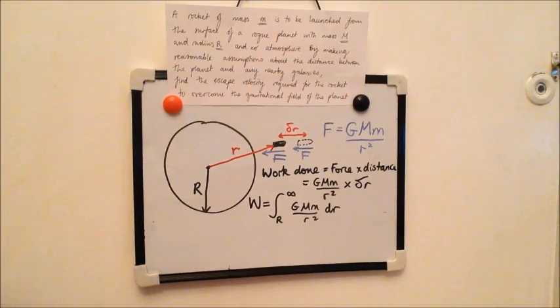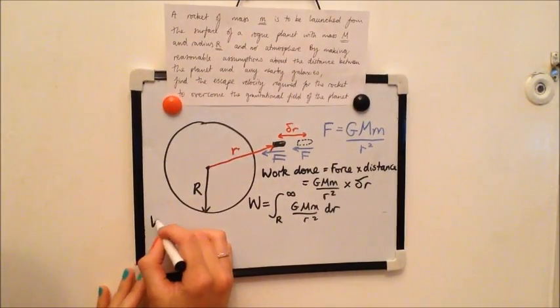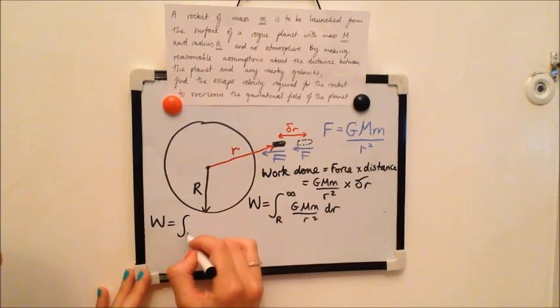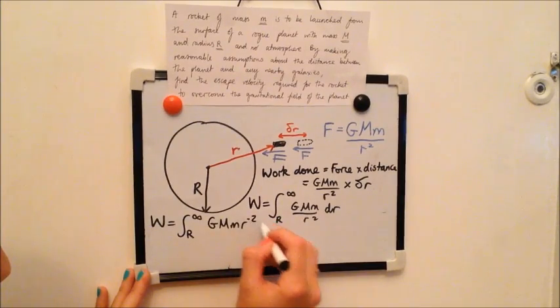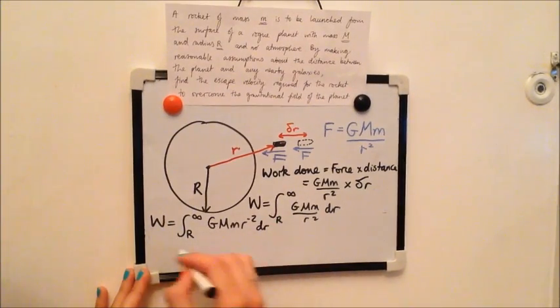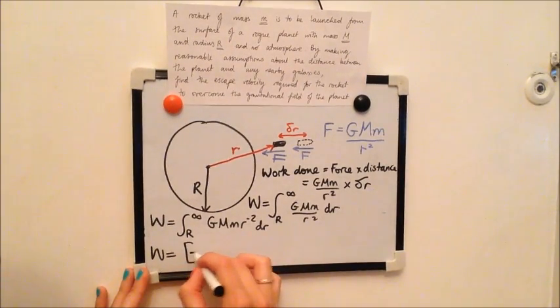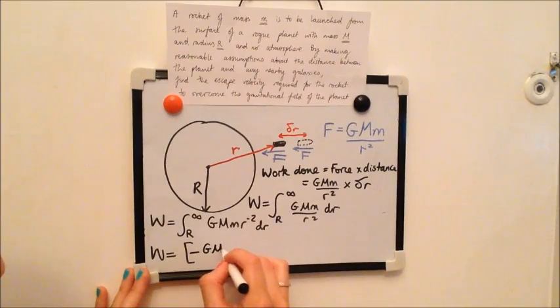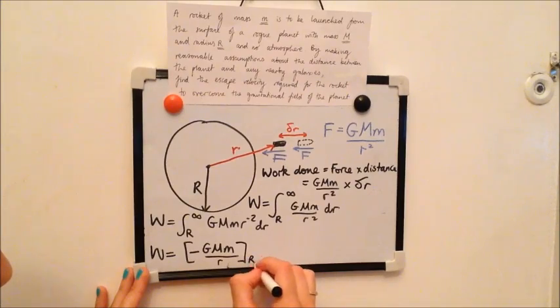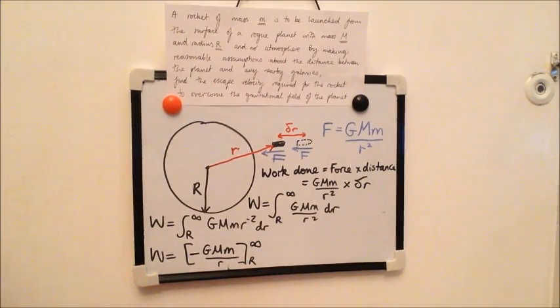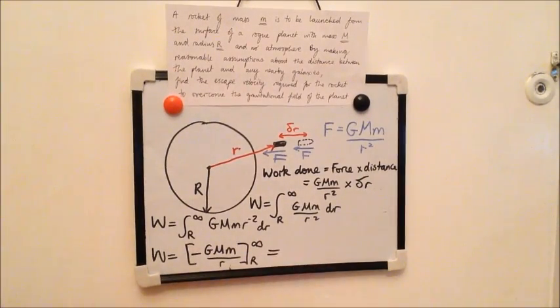And now you can see it's just an integral that we need to calculate to get the work done. So to do the integral, you can rewrite the over r squared as r to the minus two, which makes it easier. And then you can see that by adding one, dividing by the new power, you get minus r to the minus one, which you can then put on the bottom again between r and infinity.